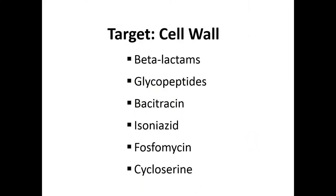Antibiotics that target the cell wall include all the beta-lactams — cephalosporins as well as carbapenems, things like imipenem. Then there are the glycopeptides, and the most important one in the United States is vancomycin. Bacitracin is a topical drug that many of you are familiar with. Some tuberculosis drugs like isoniazid also work there. And there's an unusual drug used primarily for patients with allergies or adverse drug reactions for urinary tract infections called fosfomycin.